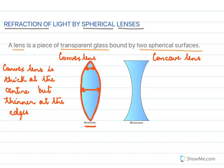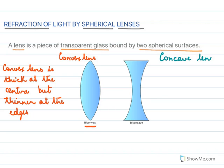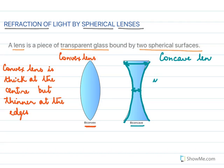Then we have the concave lens. Why is it called a concave lens? Because it is made up of two surfaces that are concave — like a cave, they are bulging inwards. So this is in fact called a bi-concave lens. It is thin in the center and thicker at the edges.